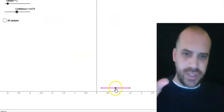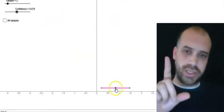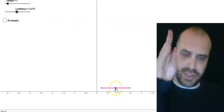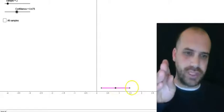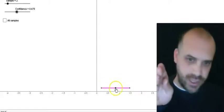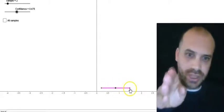First of all, margin of error. If this is our sample mean, the margin of error is the distance from the sample mean to the end point of our confidence interval. It's not from one end to another, it's just from the middle to the end.